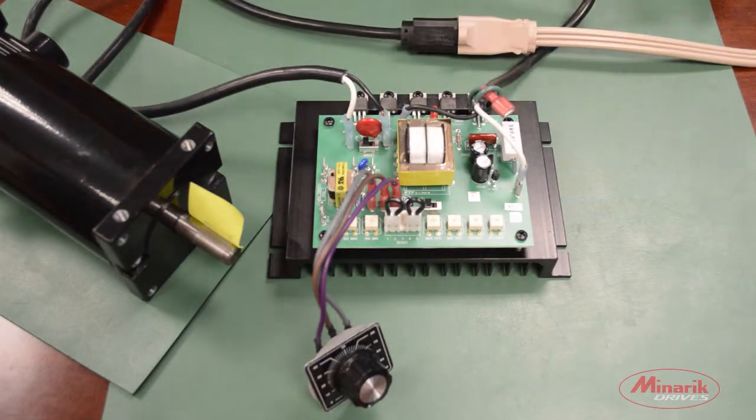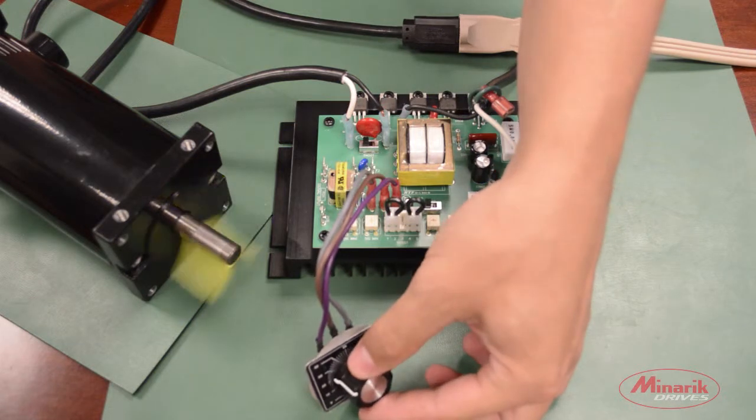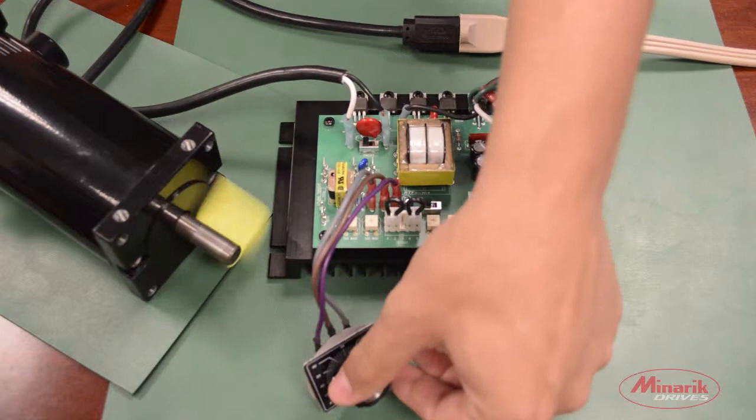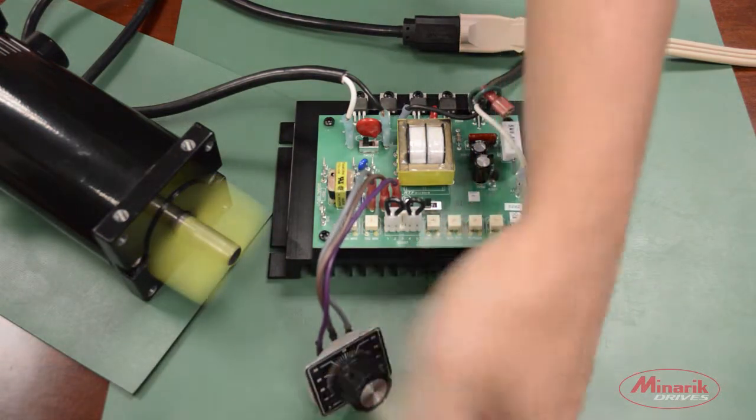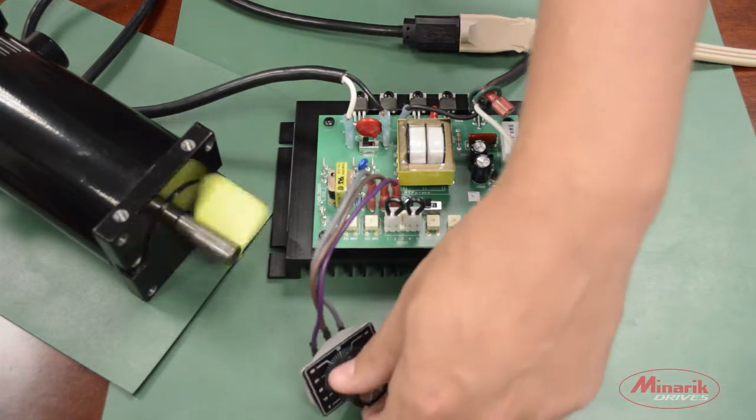We'll now go through a quick test procedure to make sure everything is working properly. We'll turn up our main speed potentiometer to make sure the drive commands the motor to rotate. Now, we'll check the full speed range and turn our main speed pot back down to 0.